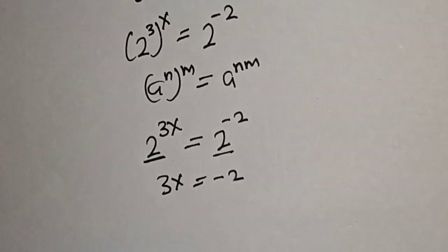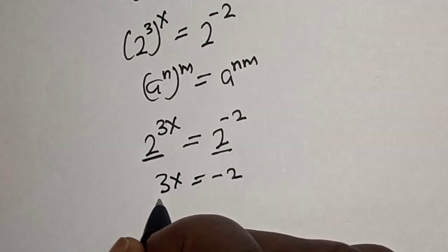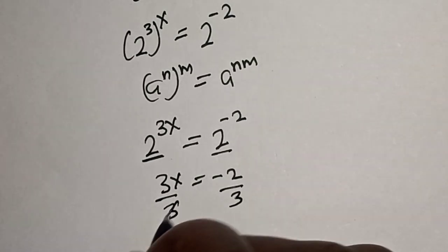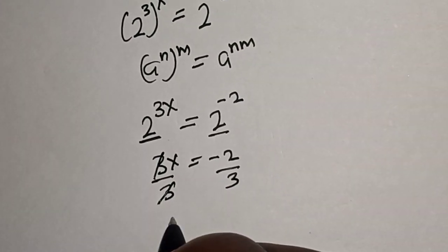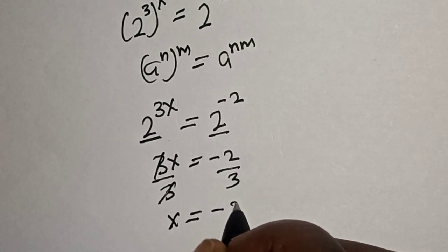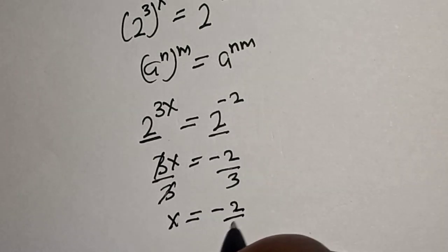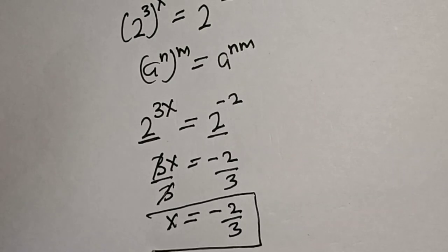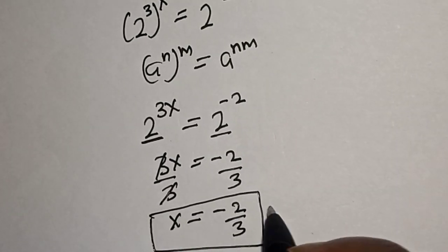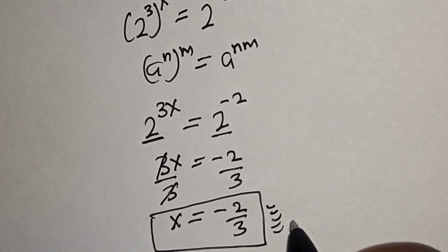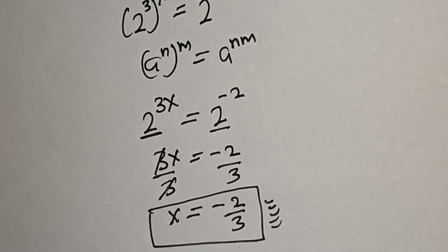Dividing both sides by 3, we get s equals minus 2 over 3. That is our final answer. Like, share, comment and subscribe. Thank you, bye bye.